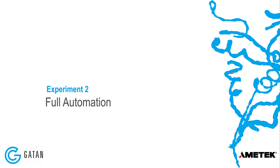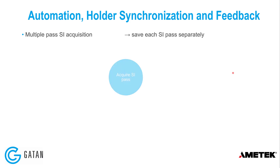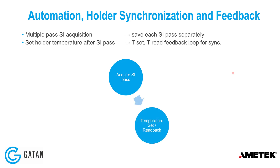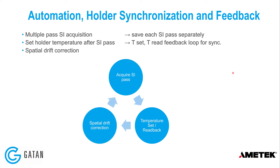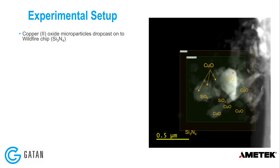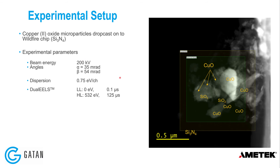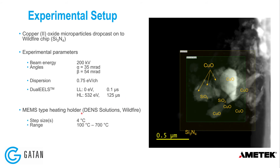To improve resolution, full automation is used with a multiple-pass spectrum image acquisition approach where each spectrum image pass is saved separately. The holder temperature is set after each pass, with a feedback loop for synchronization, and spatial drift correction is applied once the temperature stabilizes before acquiring the next pass. This experiment used the Wildfire MEMS holder with the same copper oxide particles drop-cast onto Wildfire chips, alongside some silica particles. Acquisition was at 200 kV with a higher convergence angle and dual EELS, giving much faster acquisition times and a temperature step size of just 4 degrees Celsius instead of 50 or 100 degrees.